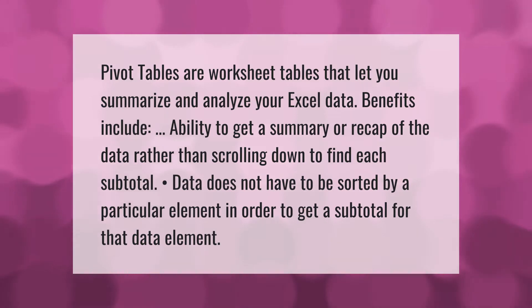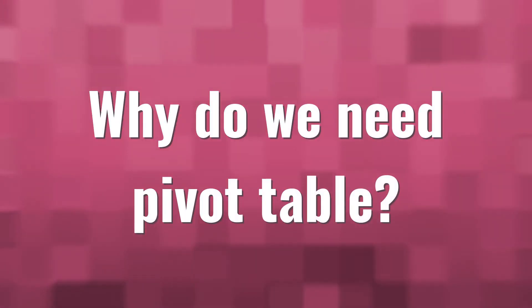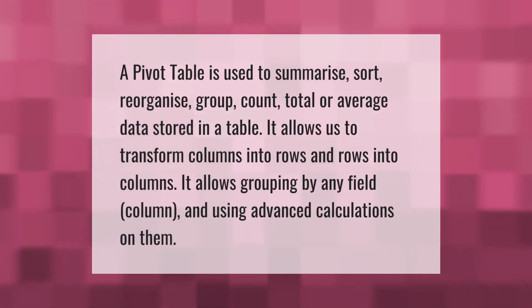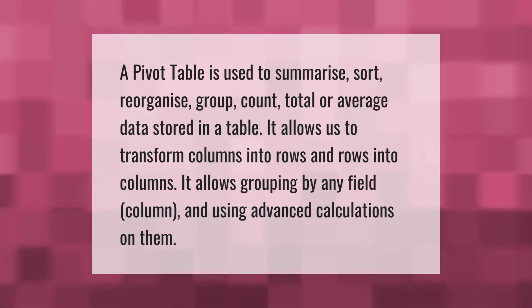Data does not have to be sorted by a particular element in order to get a subtotal for that data element. A pivot table is used to summarize, sort, reorganize, group, count, total, or average data stored in a table. It allows us to transform columns into rows and rows into columns, and allows grouping by any field or column using advanced calculations.